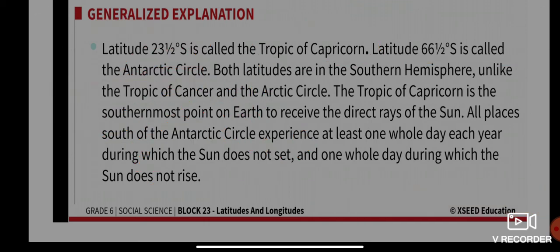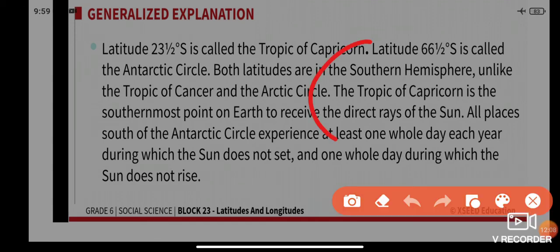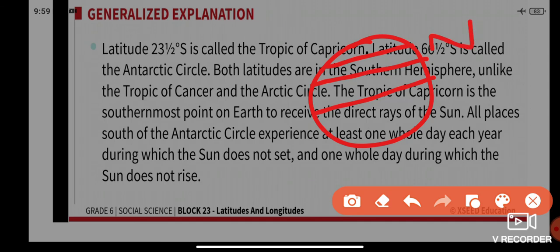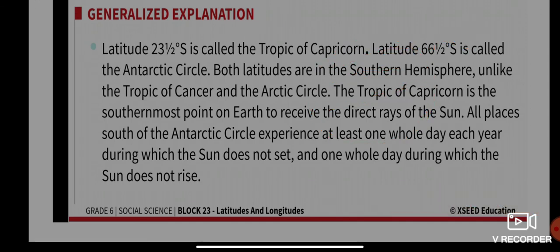Both of these latitudes are in the southern hemisphere, unlike the Tropic of Cancer and the Arctic Circle which are in the northern hemisphere. The Tropic of Capricorn is the southernmost point to receive the direct rays of the sun. All places south of the Antarctic Circle experience at least one whole day each year.